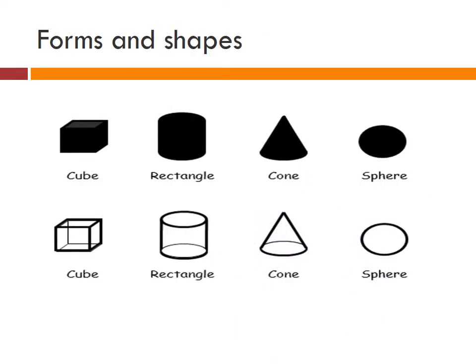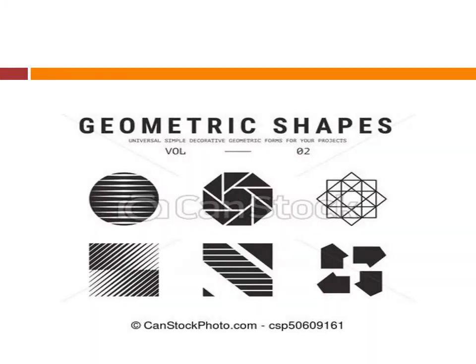Forms and shapes are the regular shapes such as squares, rectangles, circles, cubes, and other regular forms. They can be thought of as positive or negative in a 2D composition. The object is considered to be the positive form while the background is the negative space. Effective use of negative space is very important for good composition.